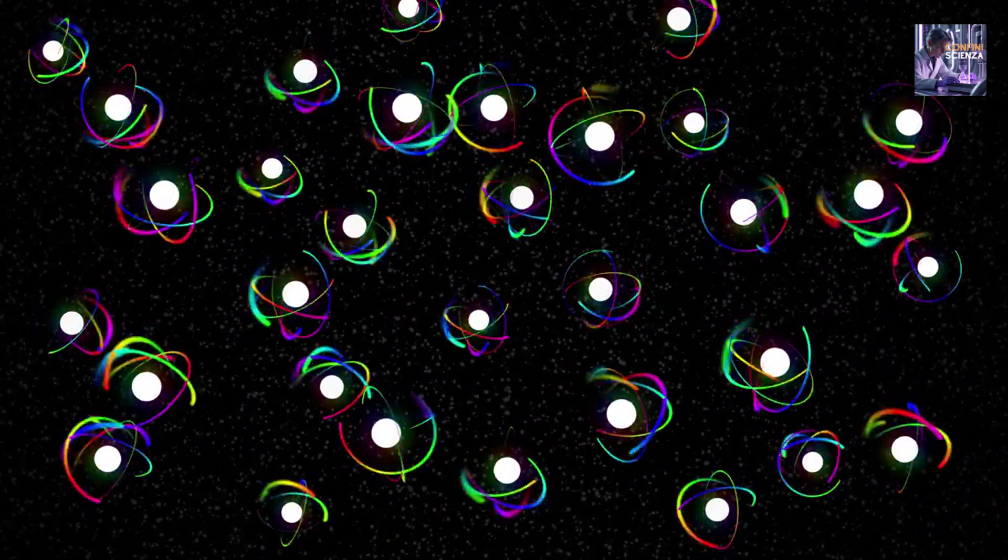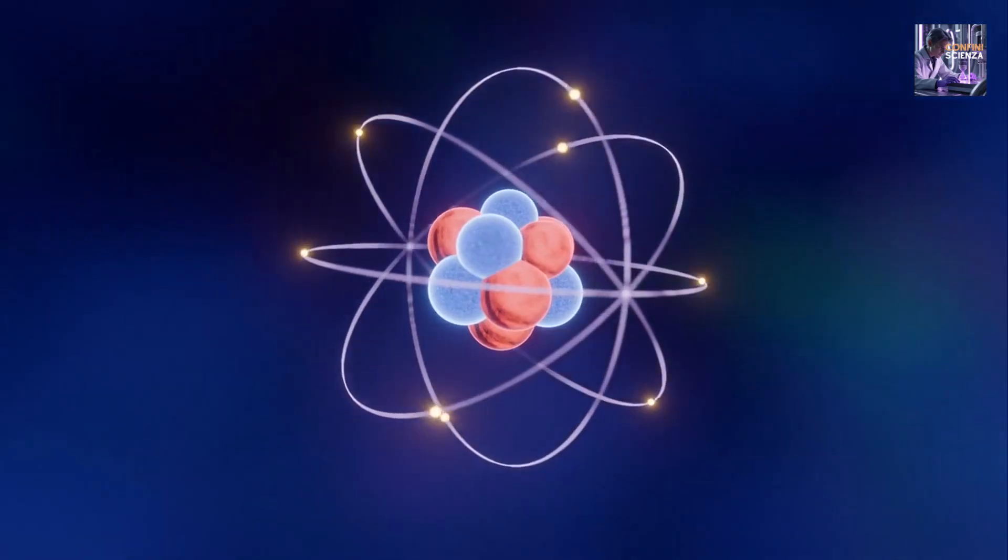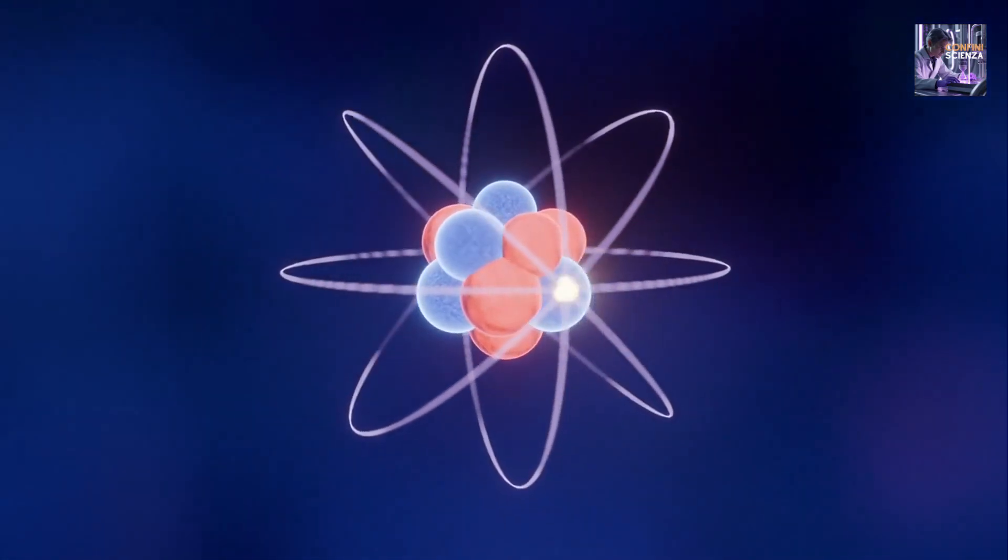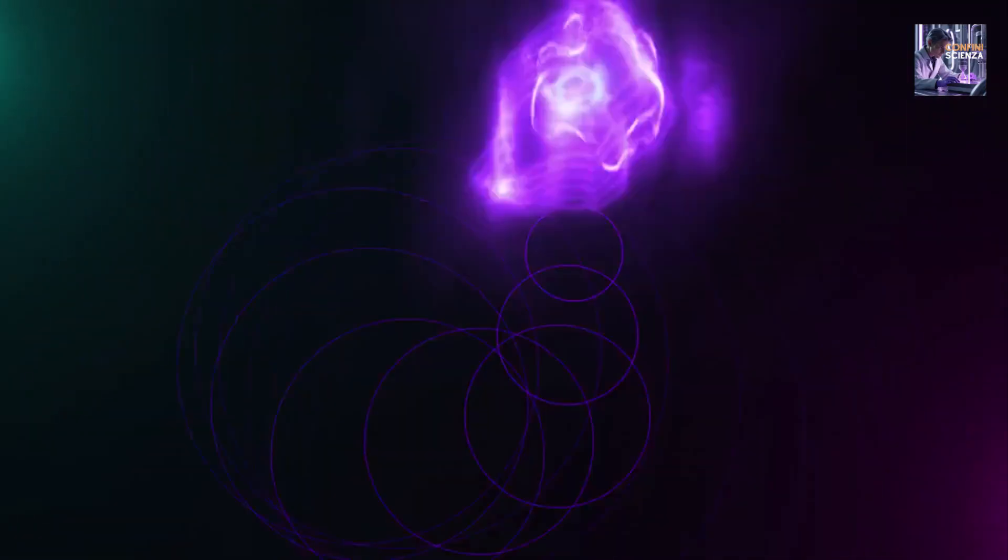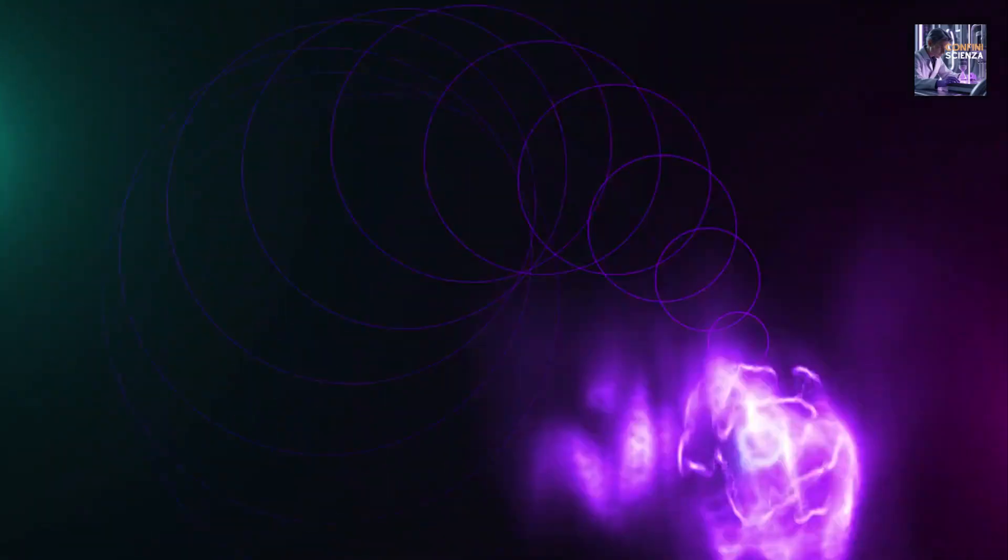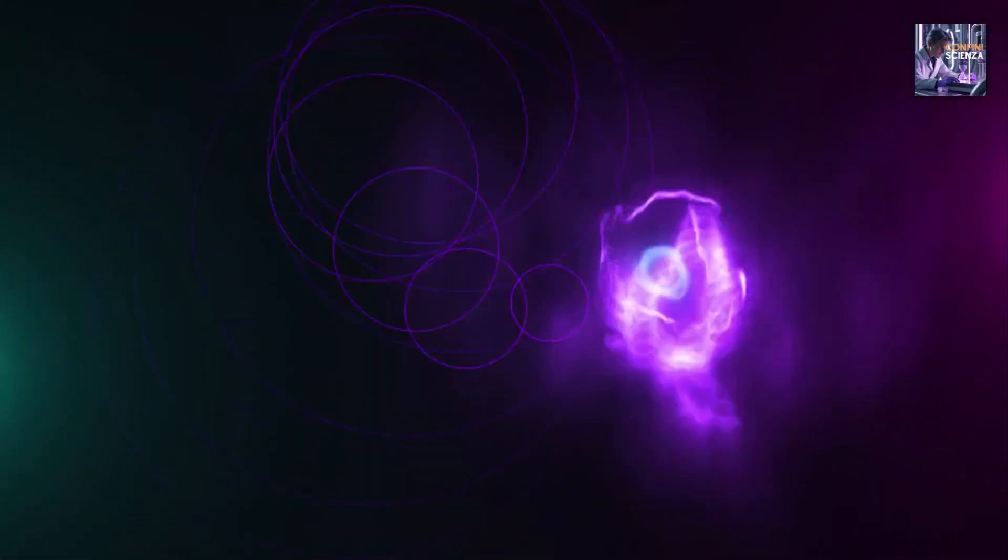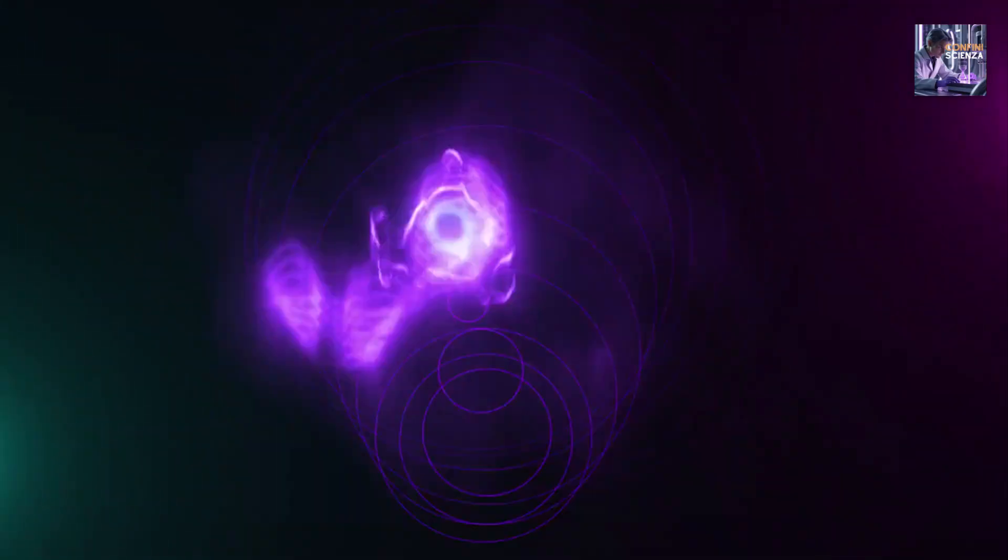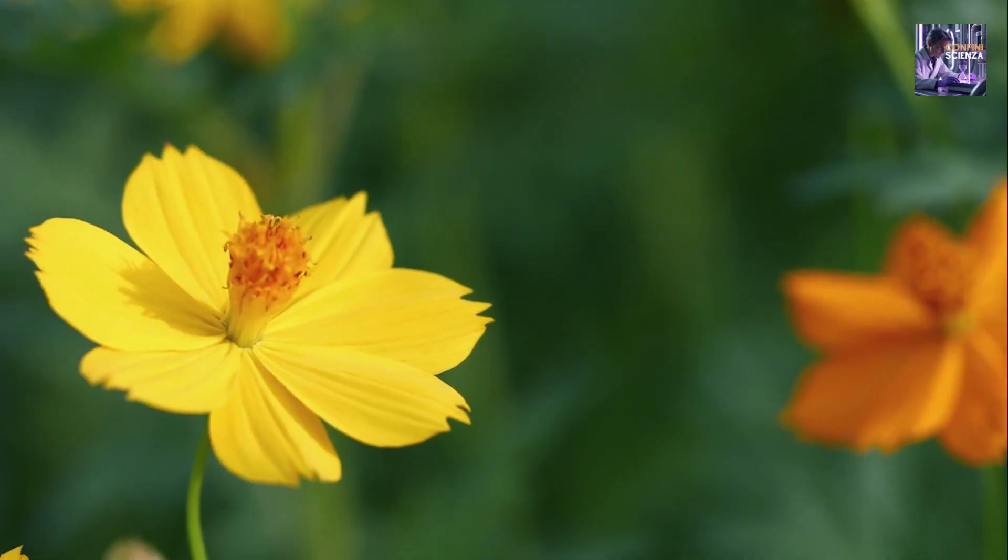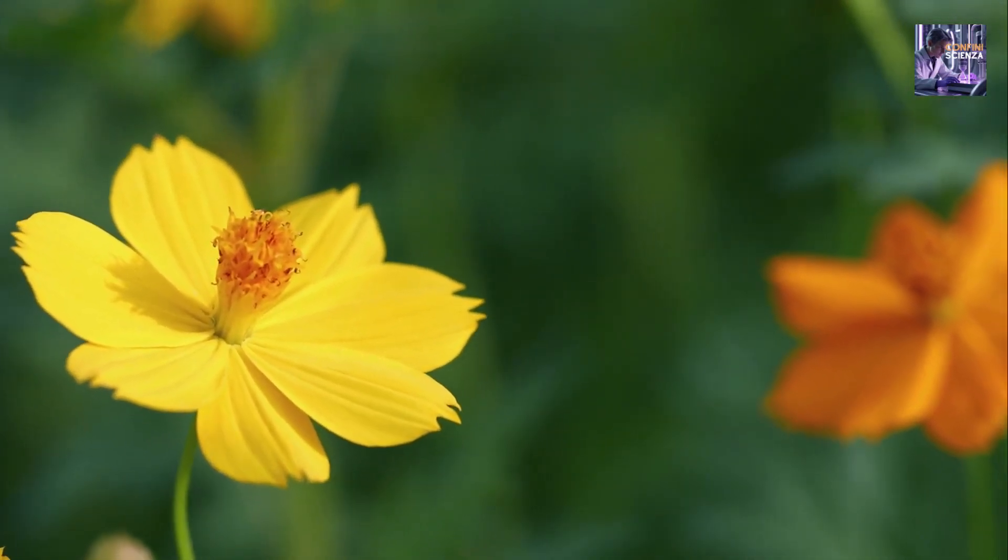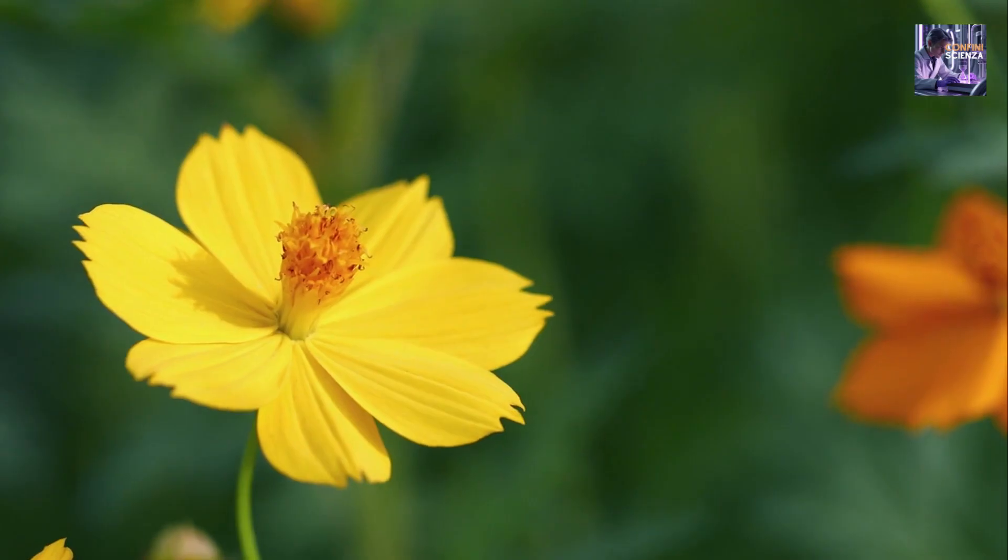Finally, the spontaneous emission of light by atoms is also influenced by the quantum vacuum. When an electron in an atom is in an excited state, it would tend to remain there for some time, but the vacuum doesn't leave it alone. The fluctuations of the vacuum's electromagnetic field interact with the electron, stimulating it to move to a lower energy state, emitting a photon. Without these fluctuations, an excited atom would not spontaneously emit light, remaining indefinitely in its excited state. Therefore, even the light we see around us, the brightness of a light bulb, or the color of a flower, ultimately depends on the incessant activity of the quantum vacuum.